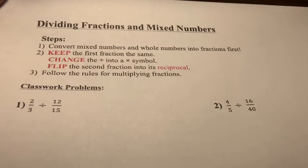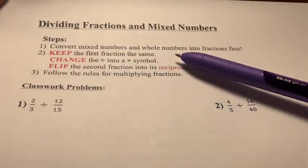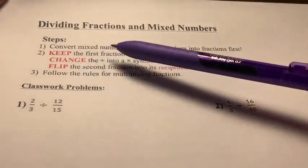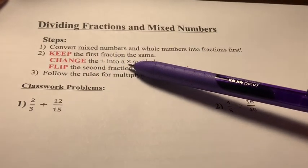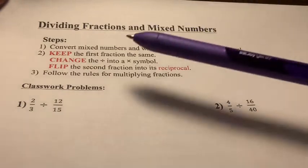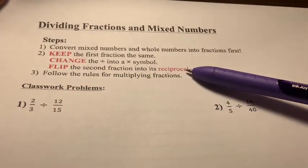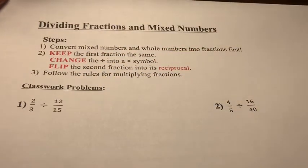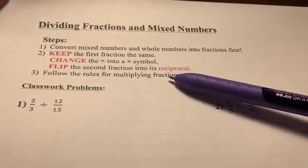Let's look at the steps. Step one says to convert mixed numbers and whole numbers into fractions first. Step two: keep the first fraction the same, change the division symbol into a multiplication symbol, and flip the second fraction into its reciprocal. Step three: follow the rules for multiplying fractions.